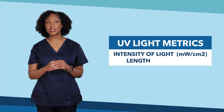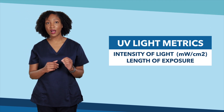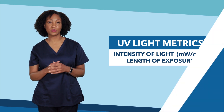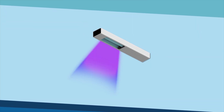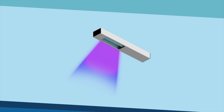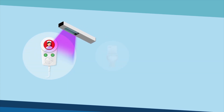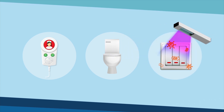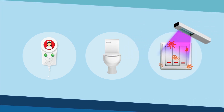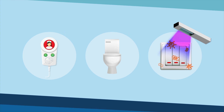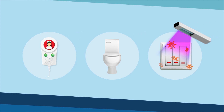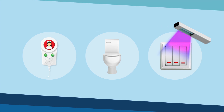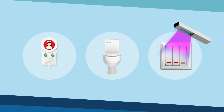The second metric is the length of exposure time, or how long the light shines on the germs. UV lights disinfect by killing everything on a surface. Whether the surface is a nurse call pillow speaker, a toilet handle, or a light switch, the germs must come into direct contact with the UV light for enough time — based on the intensity of the specific light — to be killed. Materials like dirt and dust can block the UV light, preventing it from killing germs.